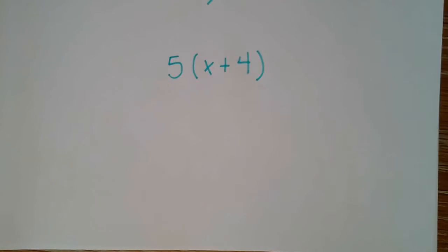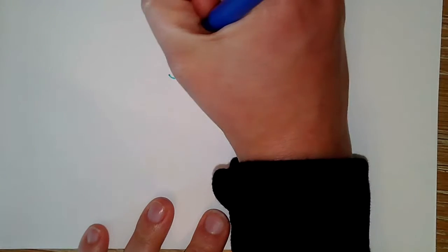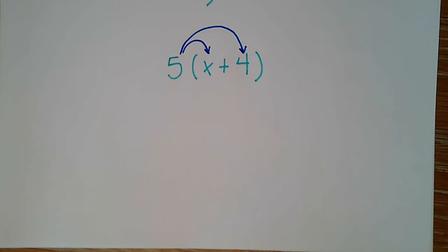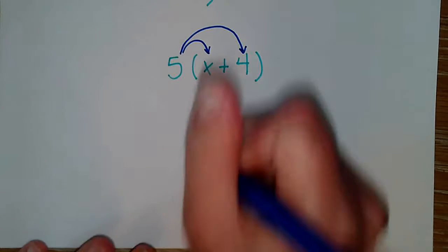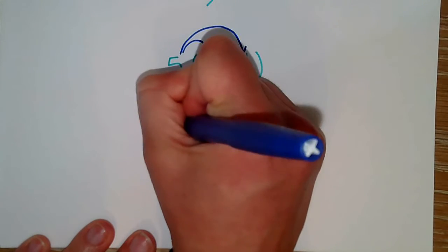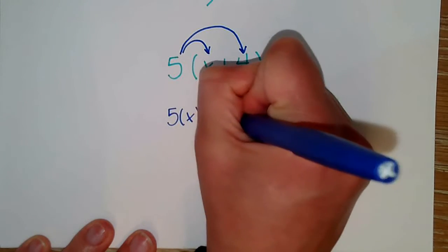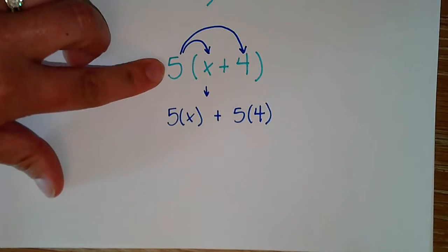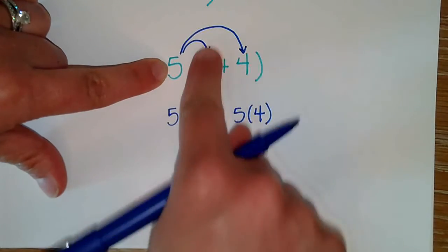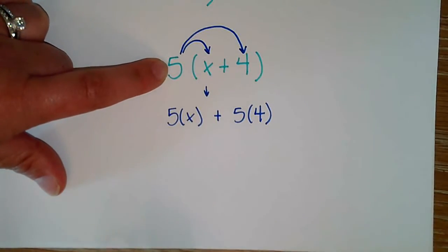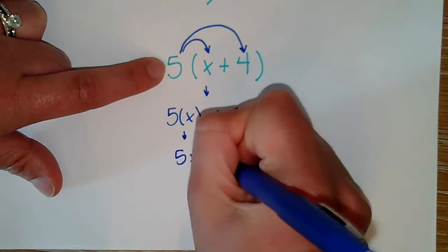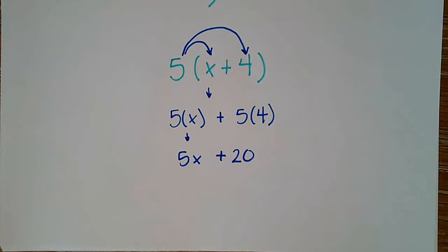So I use the distributive property and take that 5 and distribute it to each term within my parentheses. This gets me 5 times x plus 5 times 4. Now instead of multiplying that 5 to the whole group, I multiply it to each part. This simplifies to 5x plus 20, and now I've got my simplified expression.